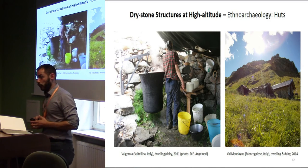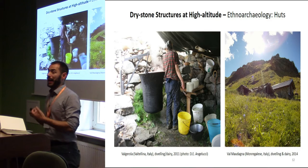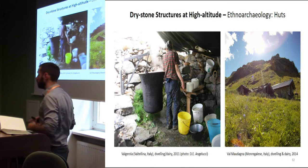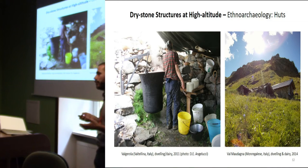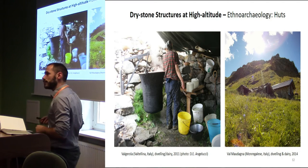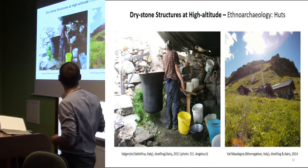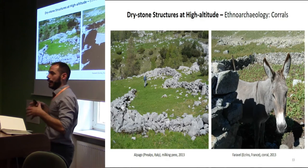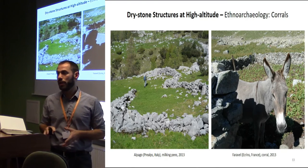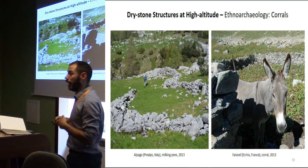So what were these structures for? In order to understand how these structures were used and what their function was, I've carried out ethnoarchaeological investigations in different parts of the Alps. There are still areas where pastoral communities use dry stone structures today — in the central and western Italian Alps. These dry stone structures are used to produce cheese and as dwellings by pastoral communities. We also have other areas where dry stone enclosures are used by herders mainly to milk the animals for cheese production, while other enclosures are used to gather animals for penning overnight.